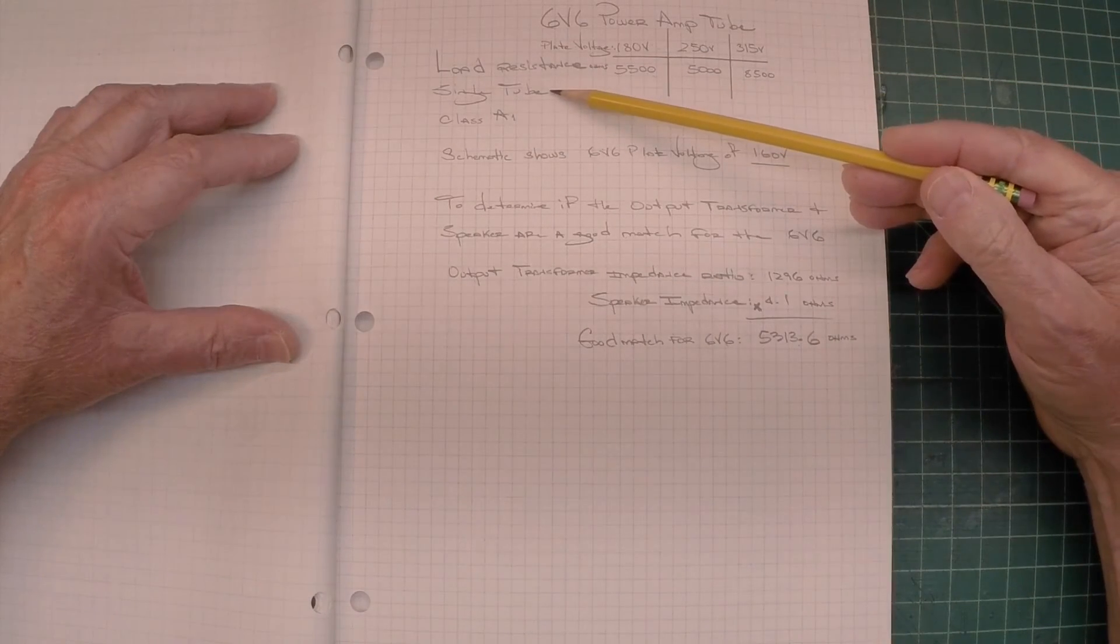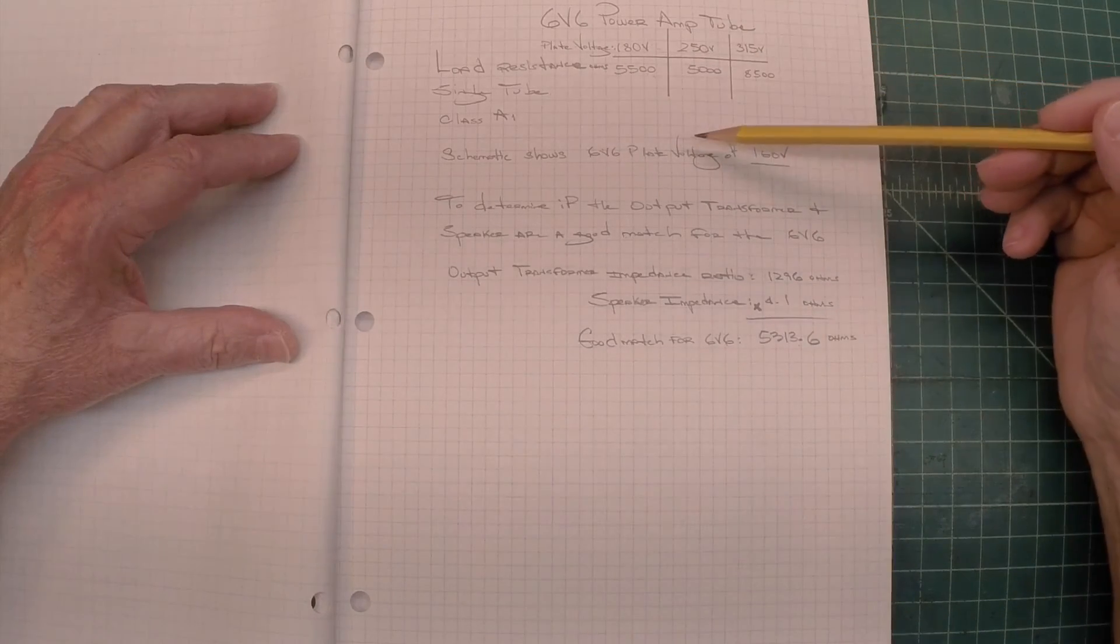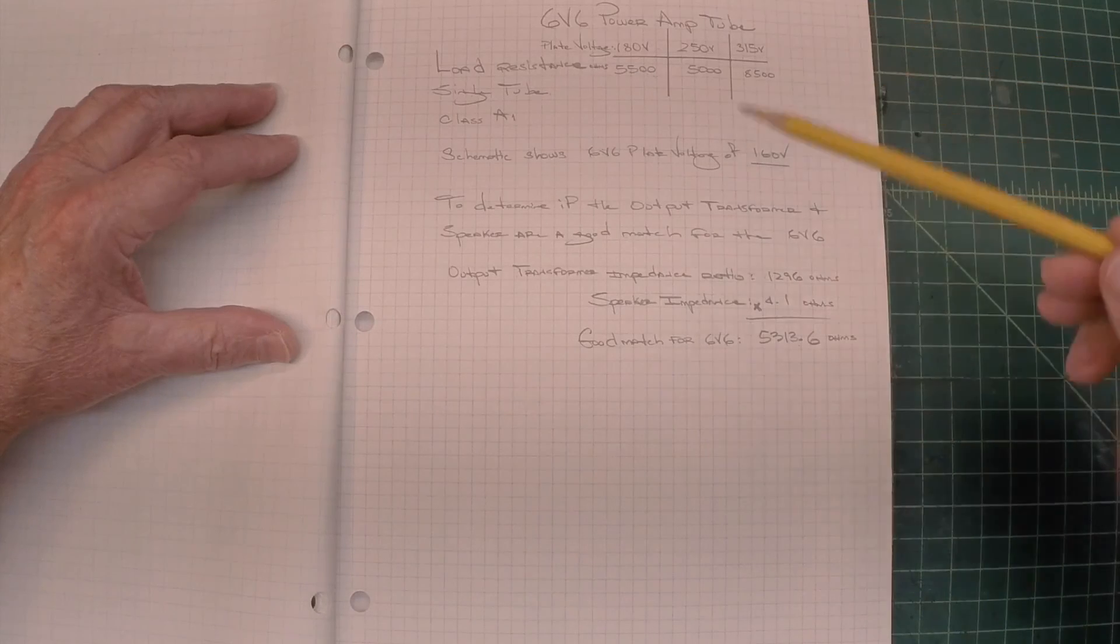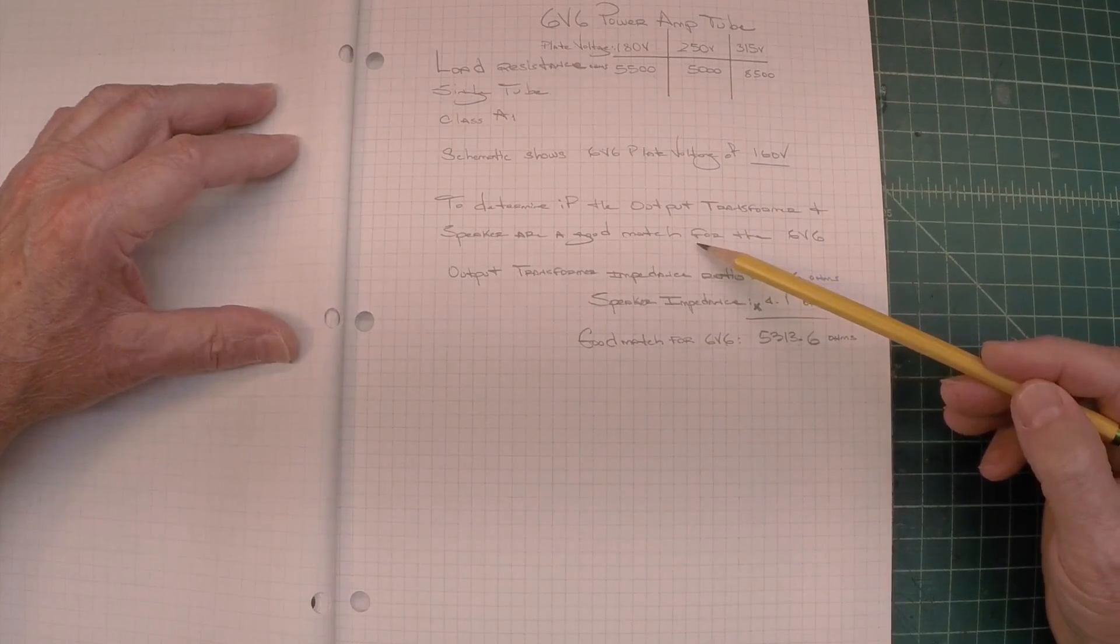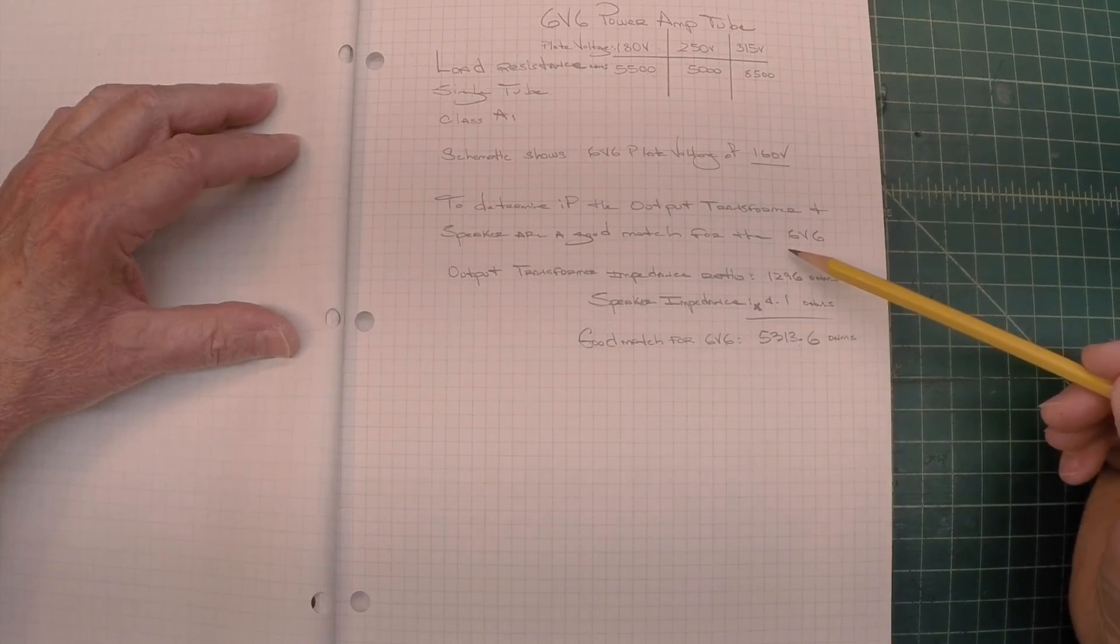Again, this is for a single tube class A, not using a push-pull circuit. So, determine if the output transformer and the speaker are a good match for the 6V6.